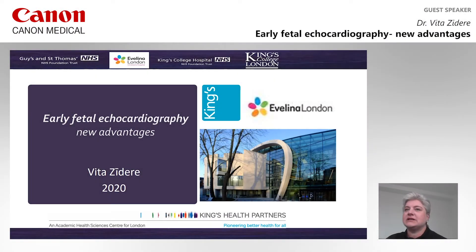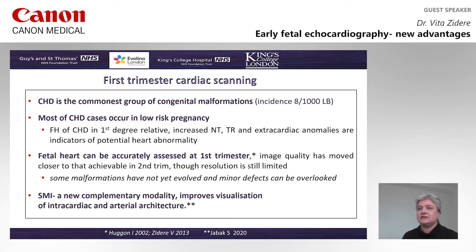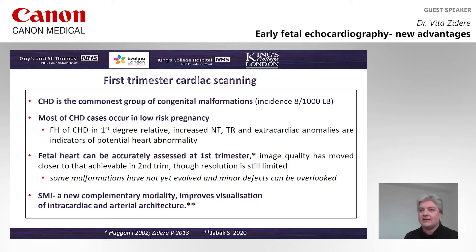Hello, today I will talk about new technology easy to be used in first trimester cardiac scanning. Congenital heart disease is the commonest group of congenital malformations and most of the heart abnormalities occur in low-risk pregnancies. Hence, it is really important that we are able to pick up major heart abnormalities as soon as possible. Fetal heart scan at first trimester has improved significantly and image quality has moved closer to the one we experience at second trimester, although sometimes resolution is still limited. Use of SMI improves visualization of intracardiac and arterial architectures and therefore will be a very significant tool in making diagnosis early.